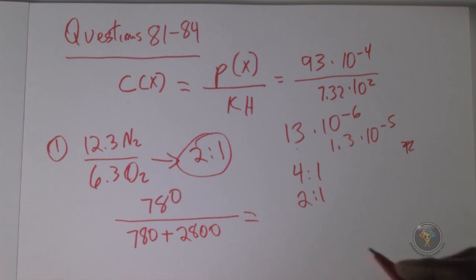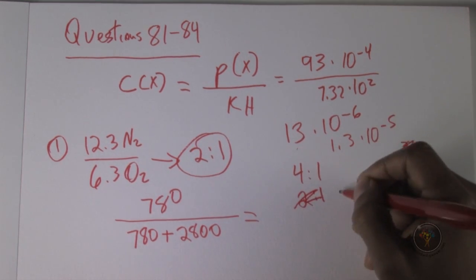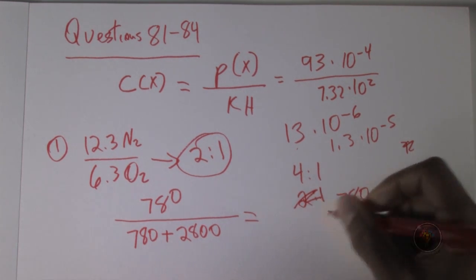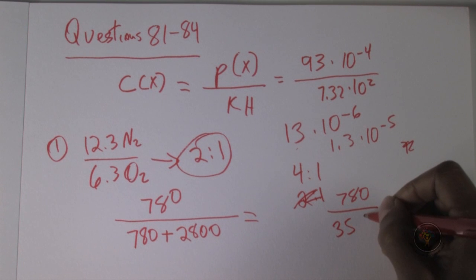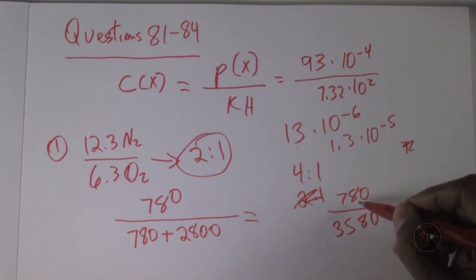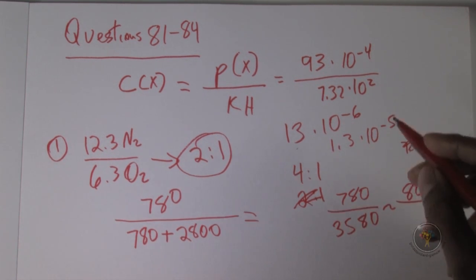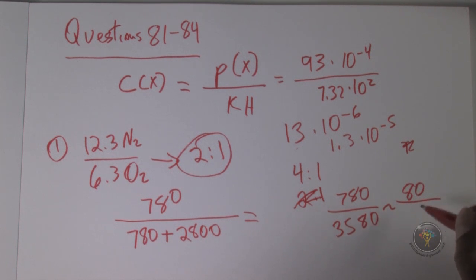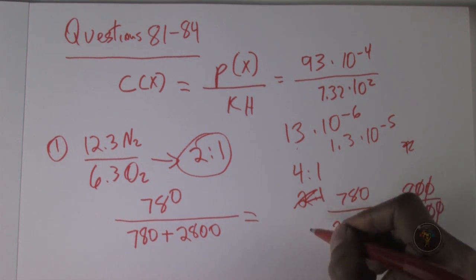This is equal to 780 over 3580. That's about 800 over 3600. We can do 8 over 36, that's 4 over 18, that's 2 over 9.